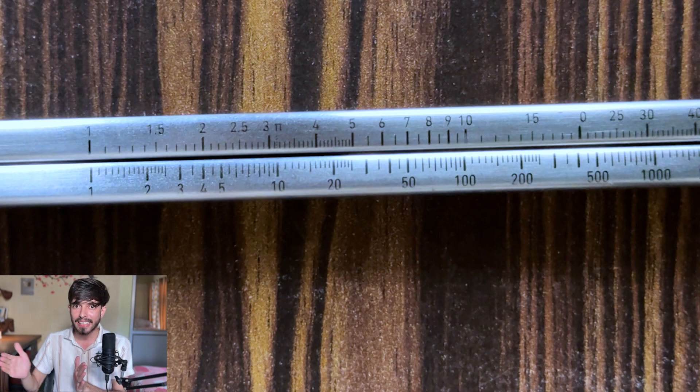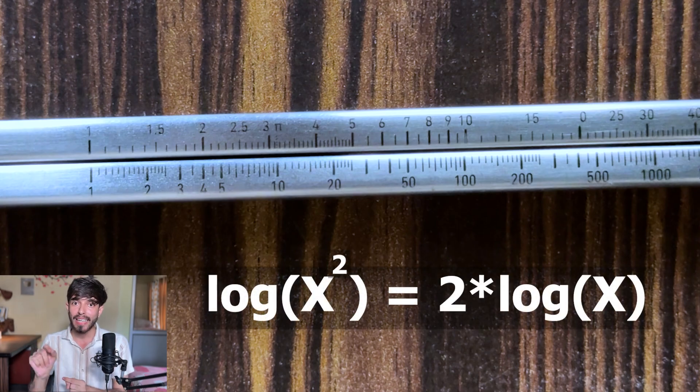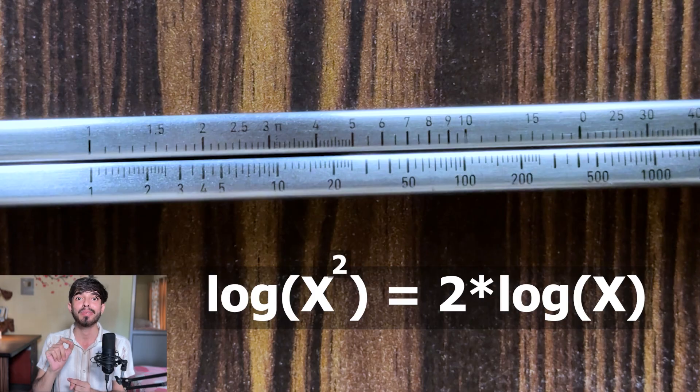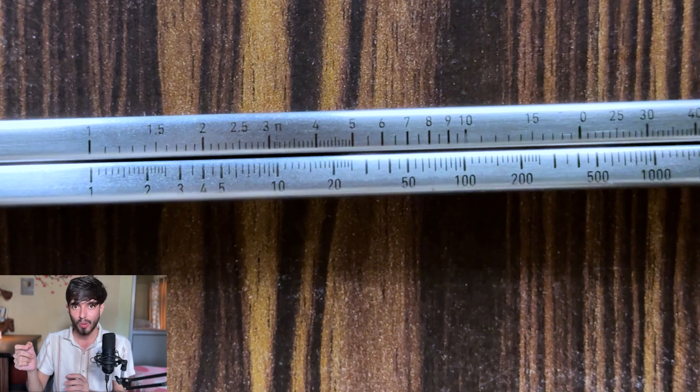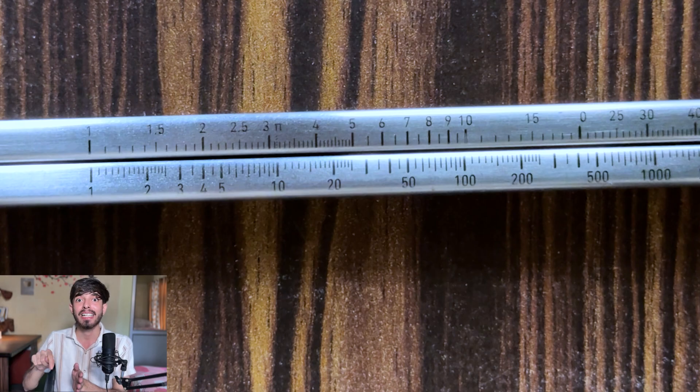So now tell me this chopstick which is below is the square of the top one. So how the lengths are related? See log of x square is 2 times log of x. So the lengths in the bottom one are just scaled by 2. So they become the square one.